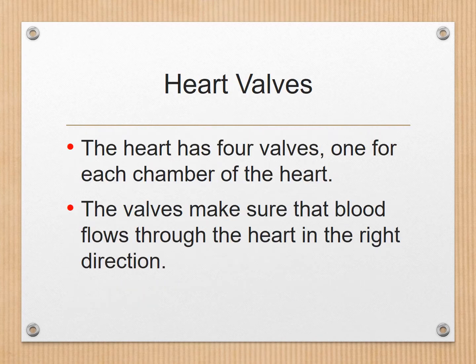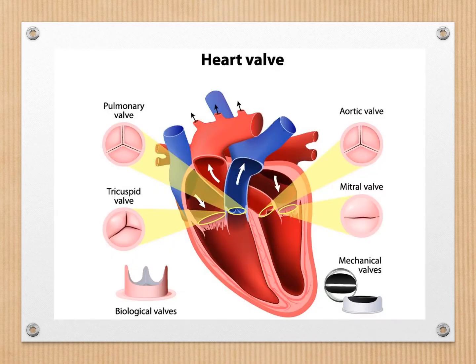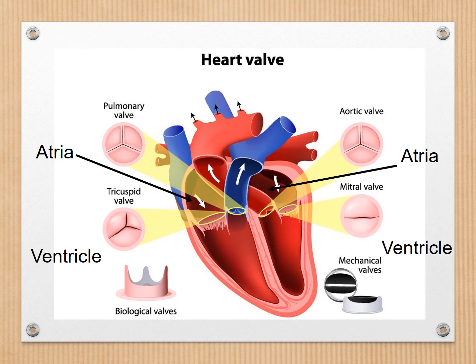The heart has four valves, one for each chamber of the heart. The valves make sure that blood flows through the heart in the right direction, like a one-way traffic system. The tricuspid valve and mitral valve are located between the atria, which are the upper heart chambers, and the ventricles, which are the lower heart chambers. The pulmonary valve and aortic valve are located between the ventricles and the major blood vessels leaving the heart.